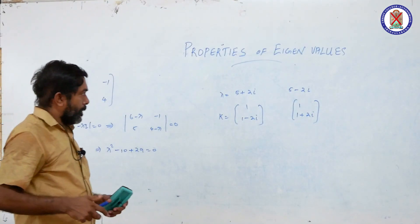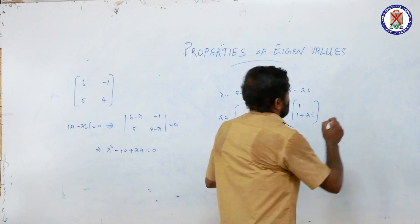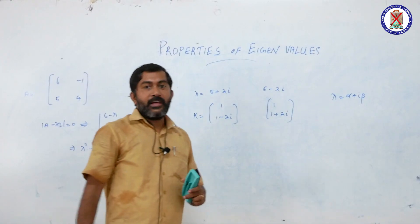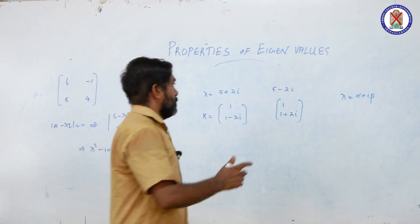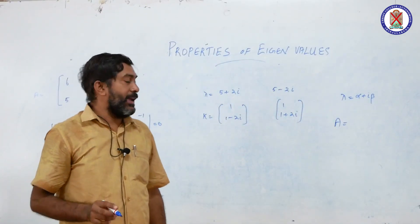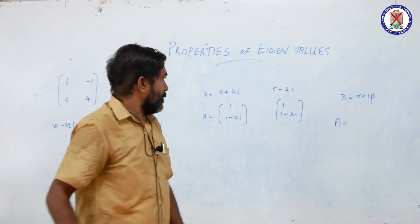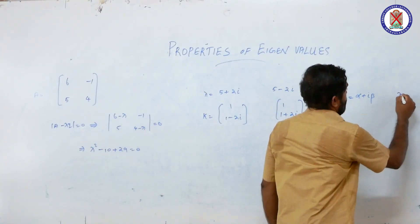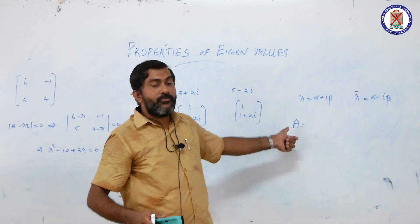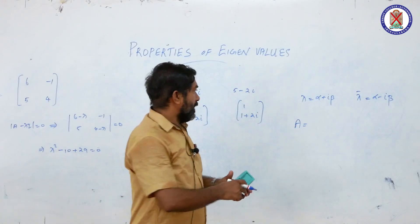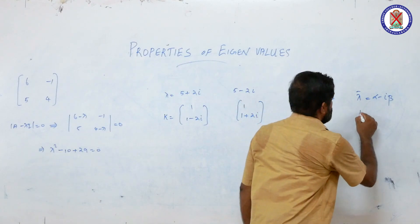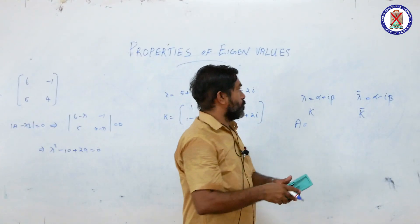The first property: if lambda equals alpha plus i*beta is an eigenvalue of a real matrix A — meaning the entries of A are all real numbers — then its conjugate alpha minus i*beta is also an eigenvalue of A. And if K is the eigenvector corresponding to lambda, then K conjugate is the eigenvector corresponding to lambda conjugate.